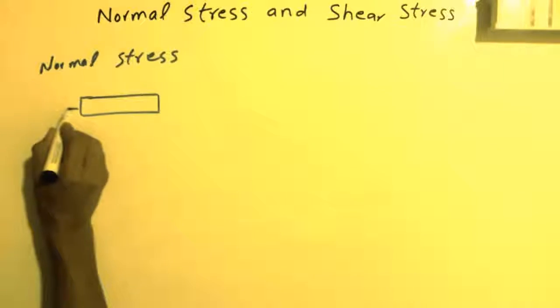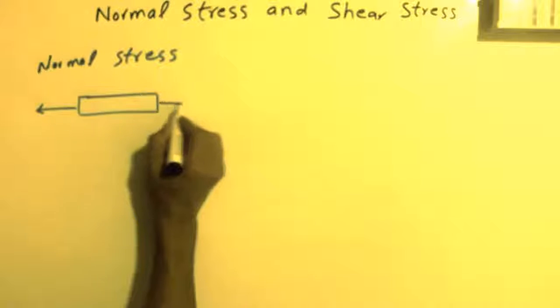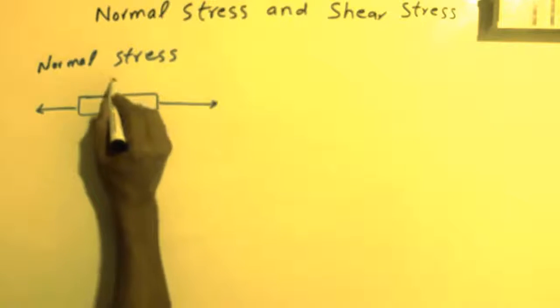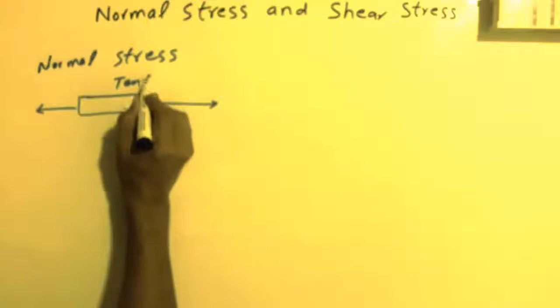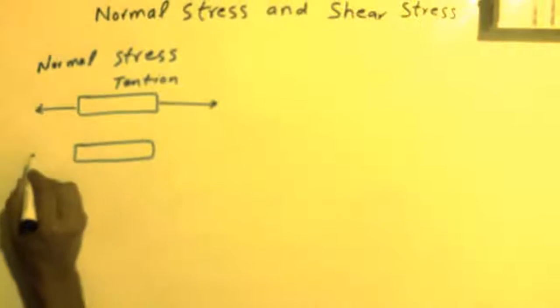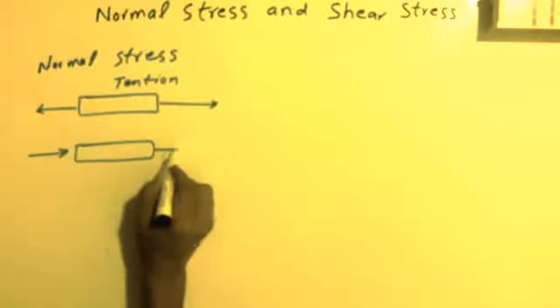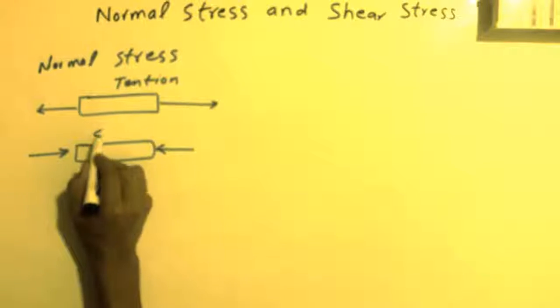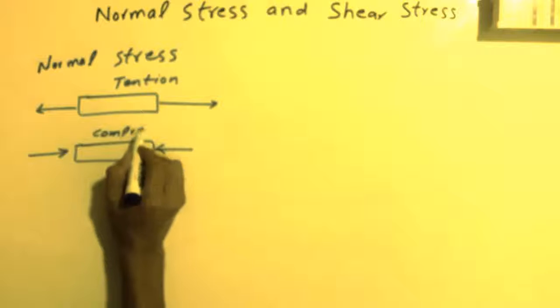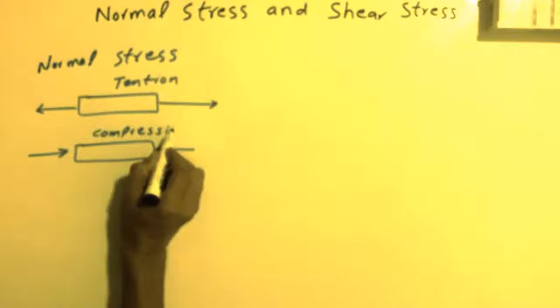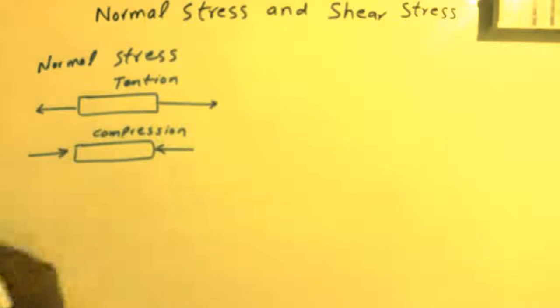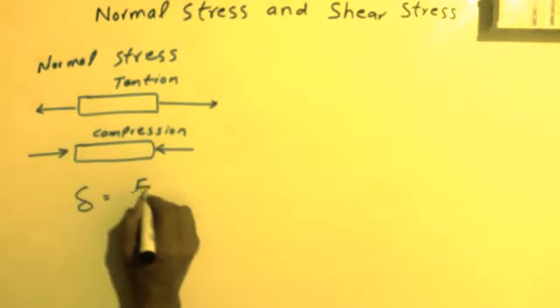We have two members: one is in tension and the other is in compression. The formula of stress is sigma equals force over area (σ = F/A).